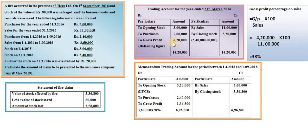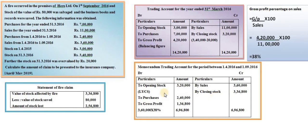From that you deduct 3 lakh (opening stock) and 7 lakh (purchases), arriving at a gross profit of 4 lakh 20,000. Now we calculate the gross profit percentage on sales. The formula is: gross profit divided by sales, multiplied by 100. That is 4 lakh 20,000 divided by 11 lakh, multiplied by 100, giving 38 percent gross profit. This 38 percent will be used in the memorandum trading account.